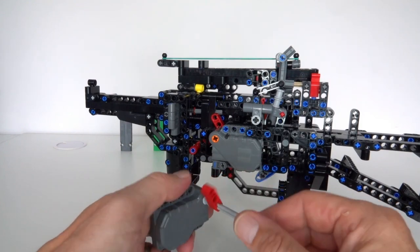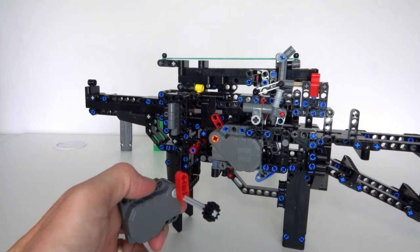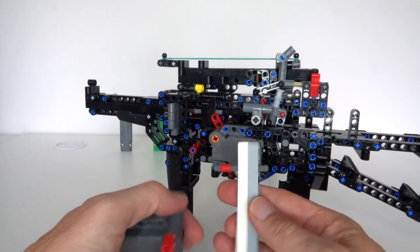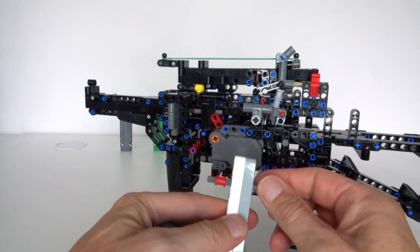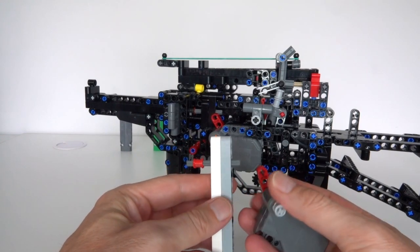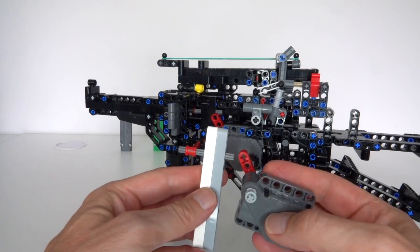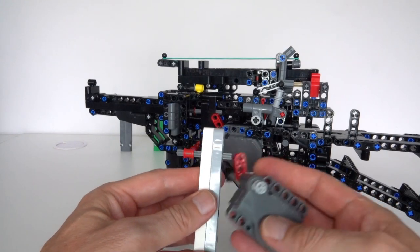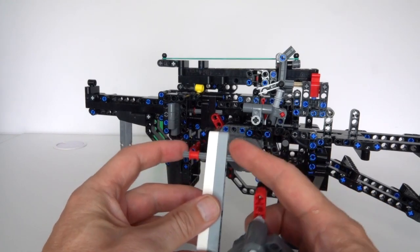And the way it fires the bullet, I've got this mechanism like this, where I've got a Lego Technic axle. And then that axle gets hit by this small lift arm on the pullback motor. And that will hit it and then fire the bullet.